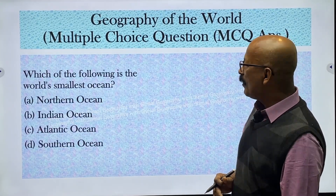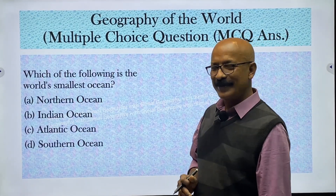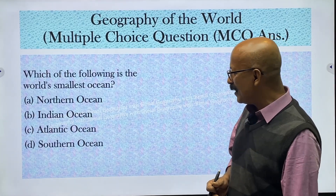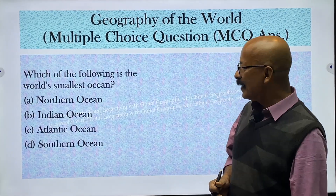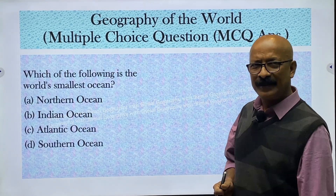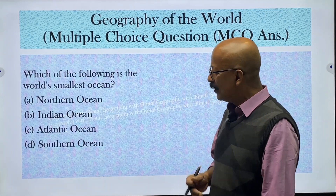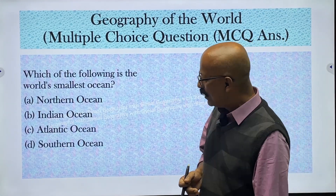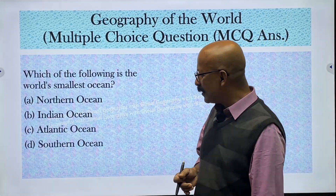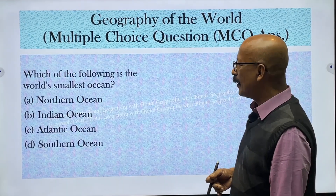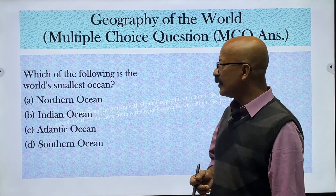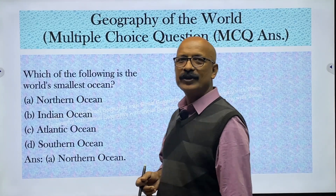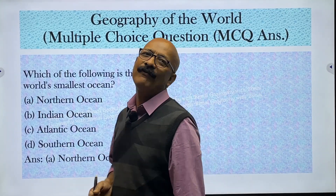Which of the following is the world's smallest ocean? Among the options — Northern Ocean, Indian Ocean, Atlantic, and Southern — the answer is the Arctic Ocean (Northern Ocean). It is the smallest one among the five oceans.